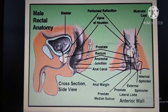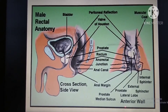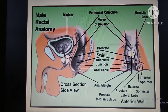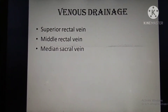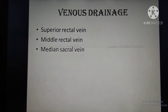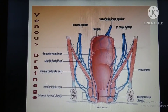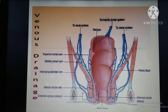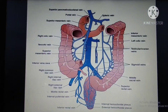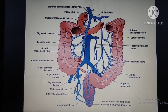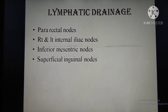Venous drainage: the veins draining the rectum are the superior rectal vein, middle rectal vein, inferior pudendal vein, and median sacral vein. These form the venous plexus of the rectum. A diagram shows the venous plexus (venus plexus) of the rectum.